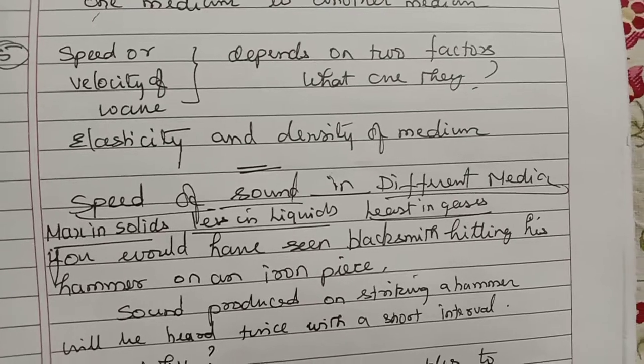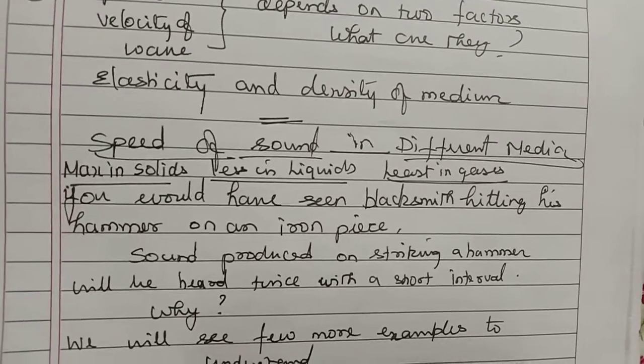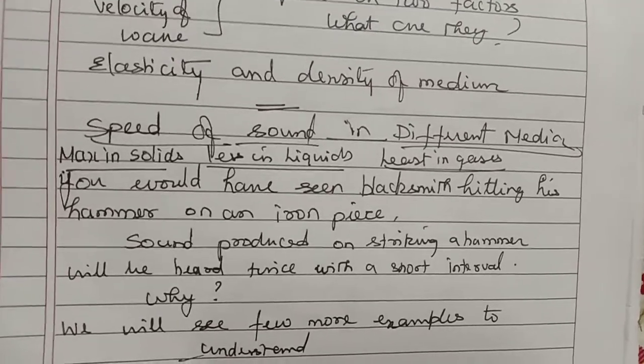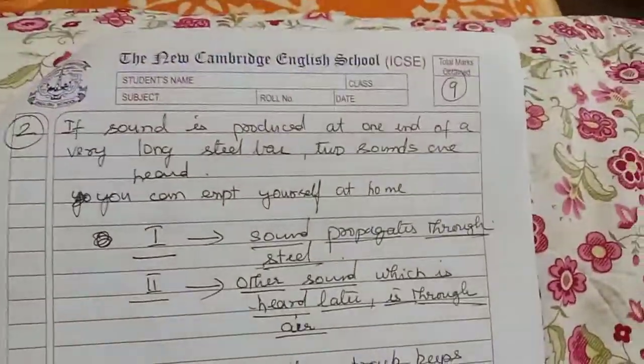You would have seen a blacksmith hitting his hammer on an iron piece. Sound produced on striking a hammer will be heard twice with a short interval. Why? Because sound travels first through steel, through iron, and next it will travel through air.